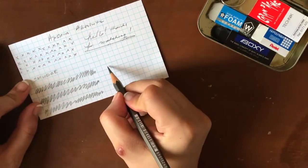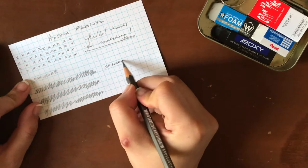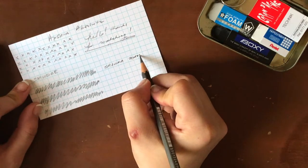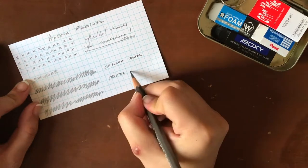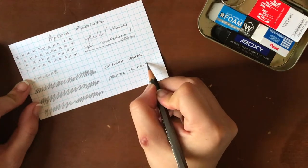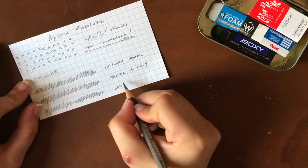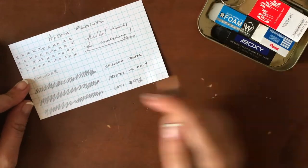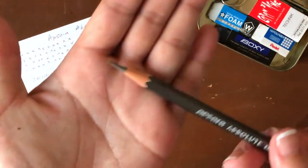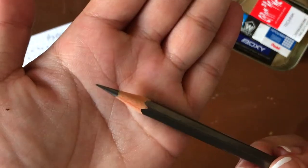I'm going to label each one next to it so we know what eraser we used. So we have the Sakura Foam, Pentel High Polymer, and the Uni Boxy. Again, I've written all of that. I've done all these squiggly lines.